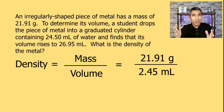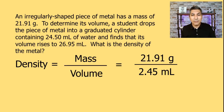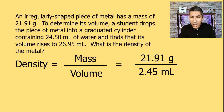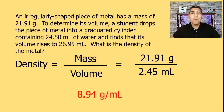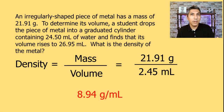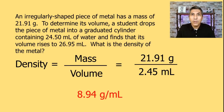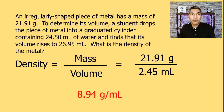So all we have to do is take 21.91 grams and divide by 2.45 milliliters, and we find that the density of this object is about 8.94 grams per milliliter. We can take that calculated density and match it up to the densities of some common metals, and we'd find that copper has a density almost exactly equal to that. So we can safely say this chunk of metal is probably copper — we can actually identify objects based upon their density.